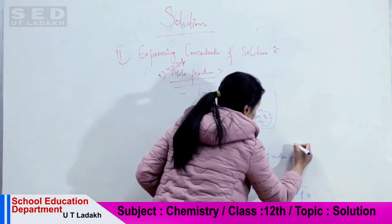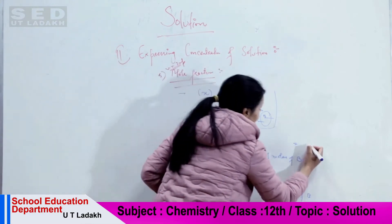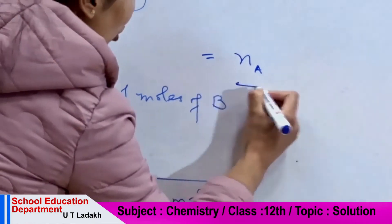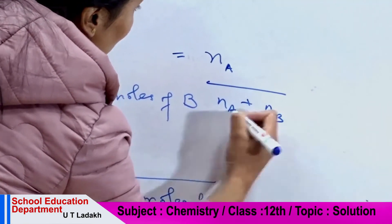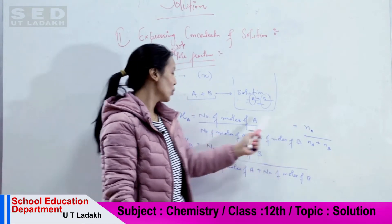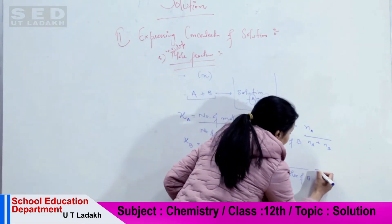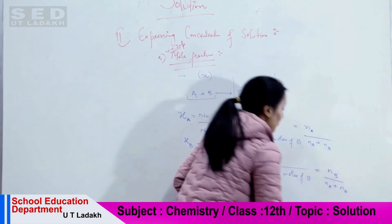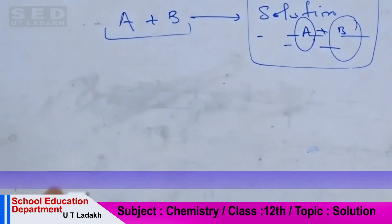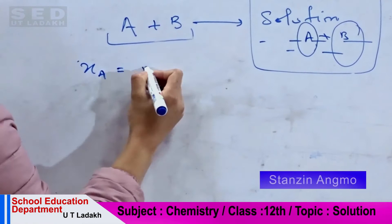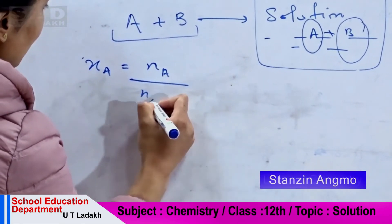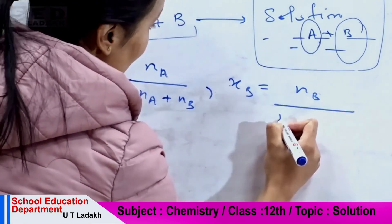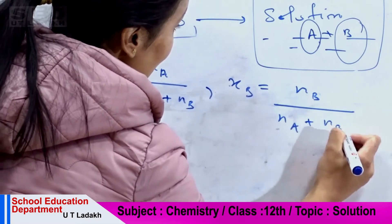Now, how do we denote the number of moles? We denote it by symbol n. So simply, xA equals nA upon nA plus nB, and similarly xB equals nB upon nA plus nB. So mole fraction of A is number of moles of A upon total number of moles in the solution, and xB is number of moles of B upon number of moles of A plus B.